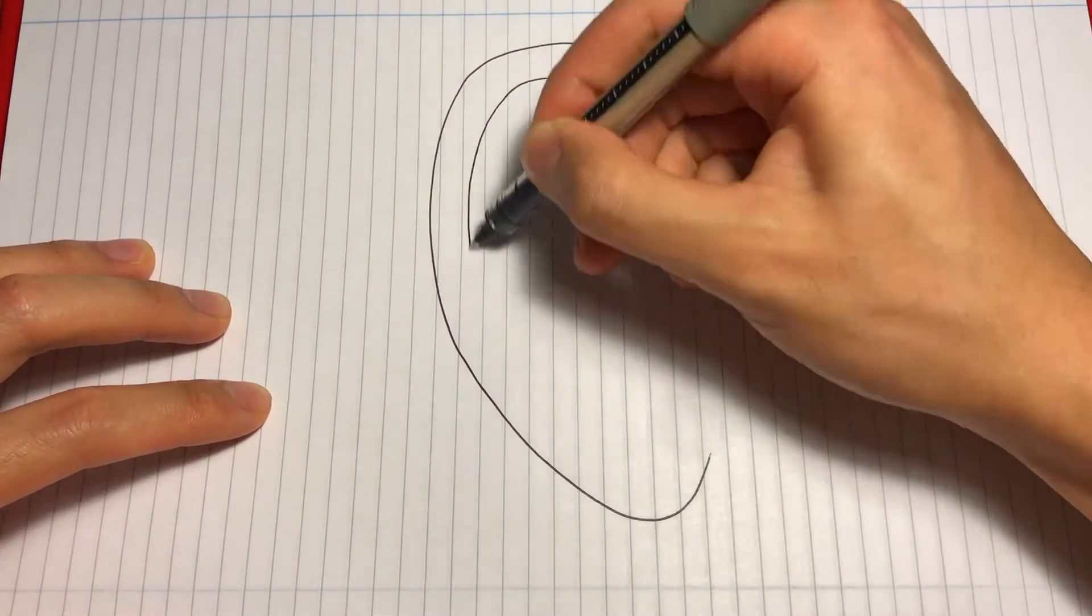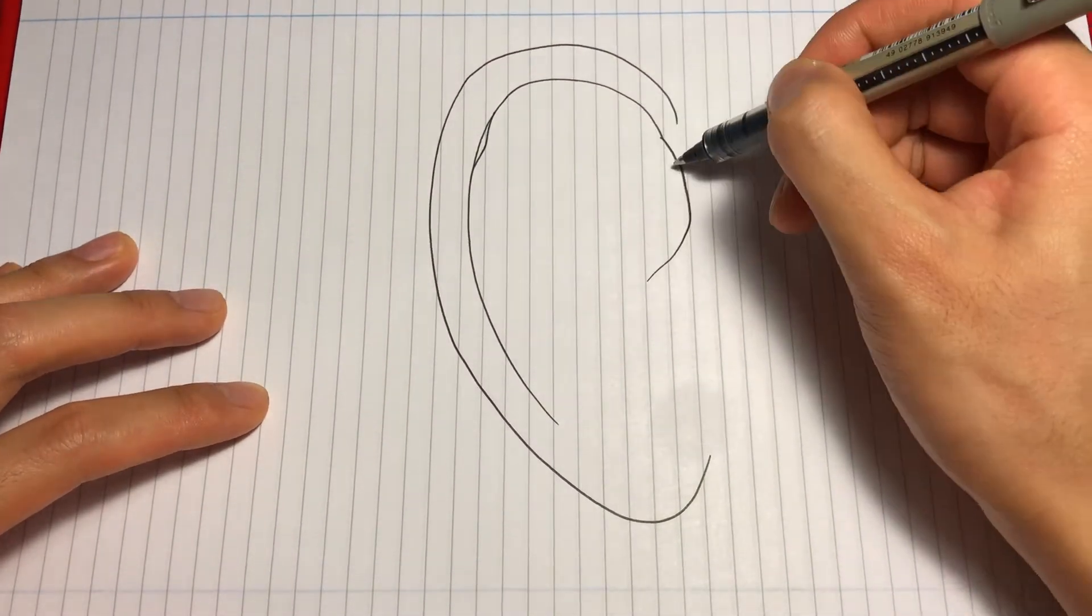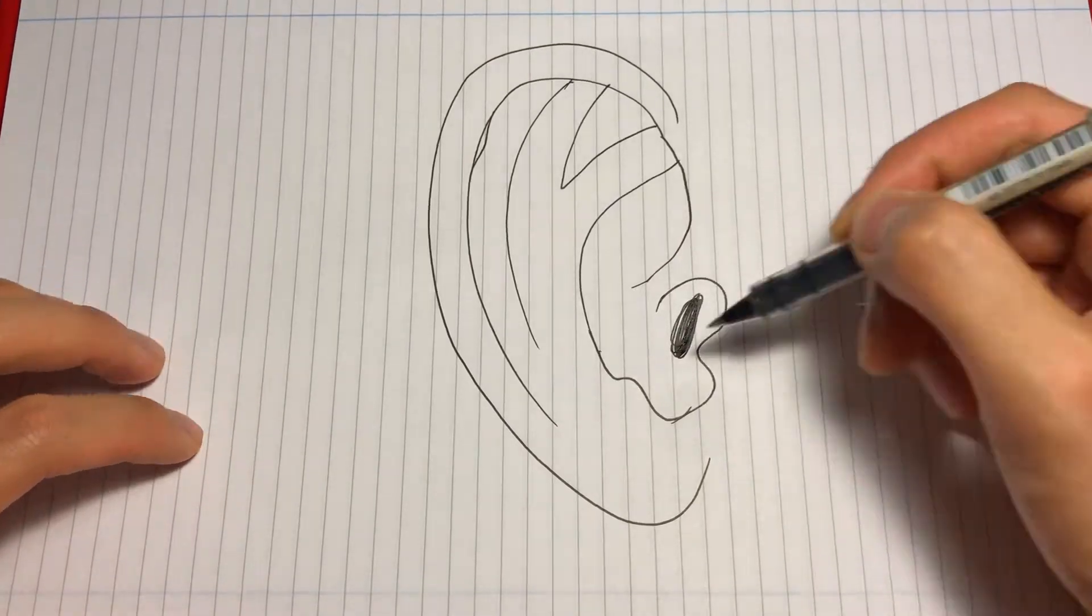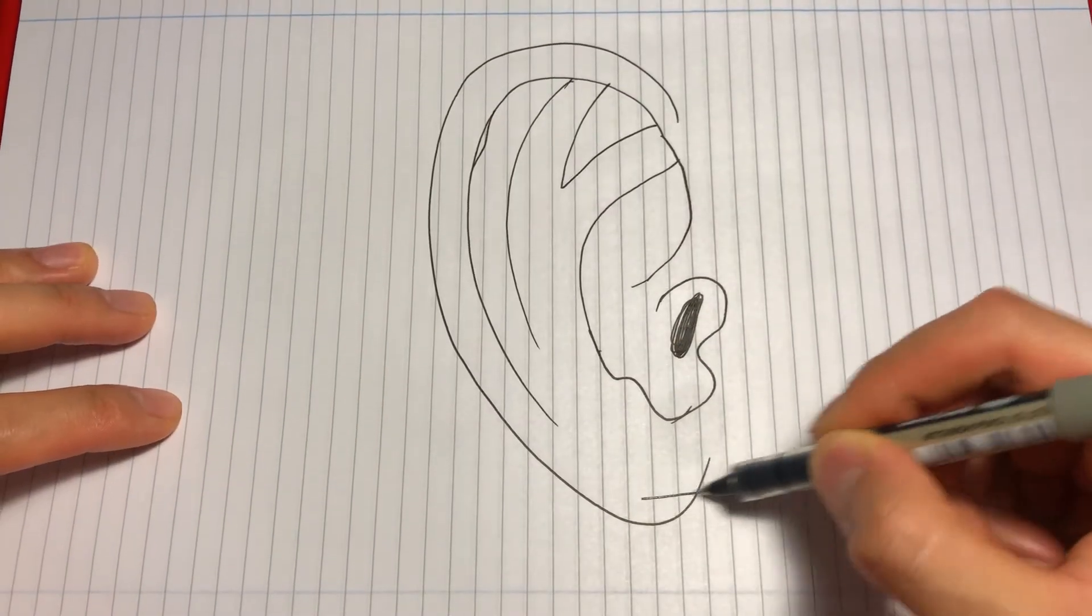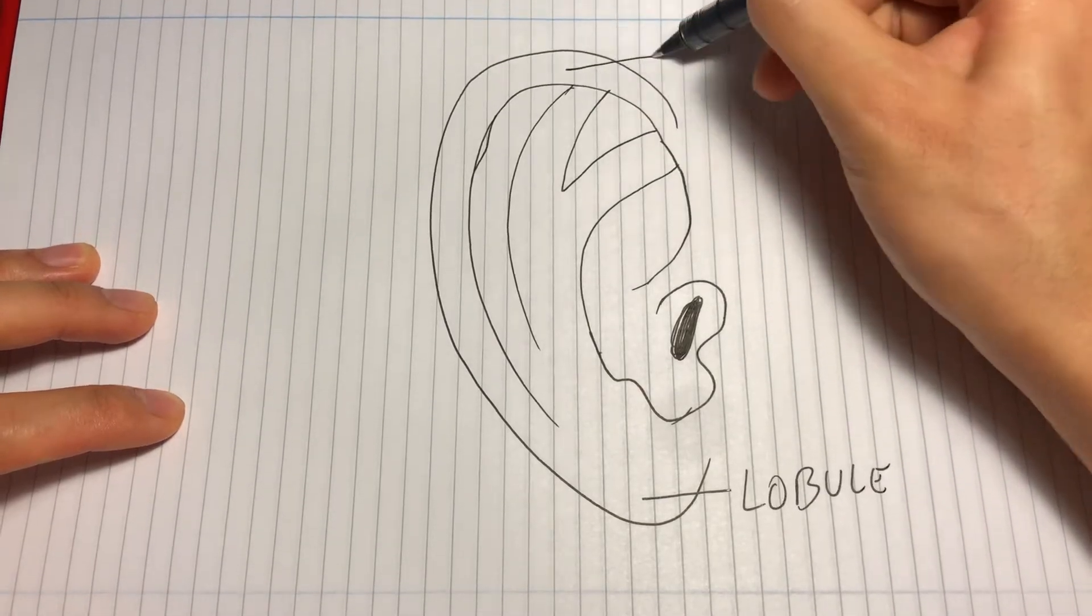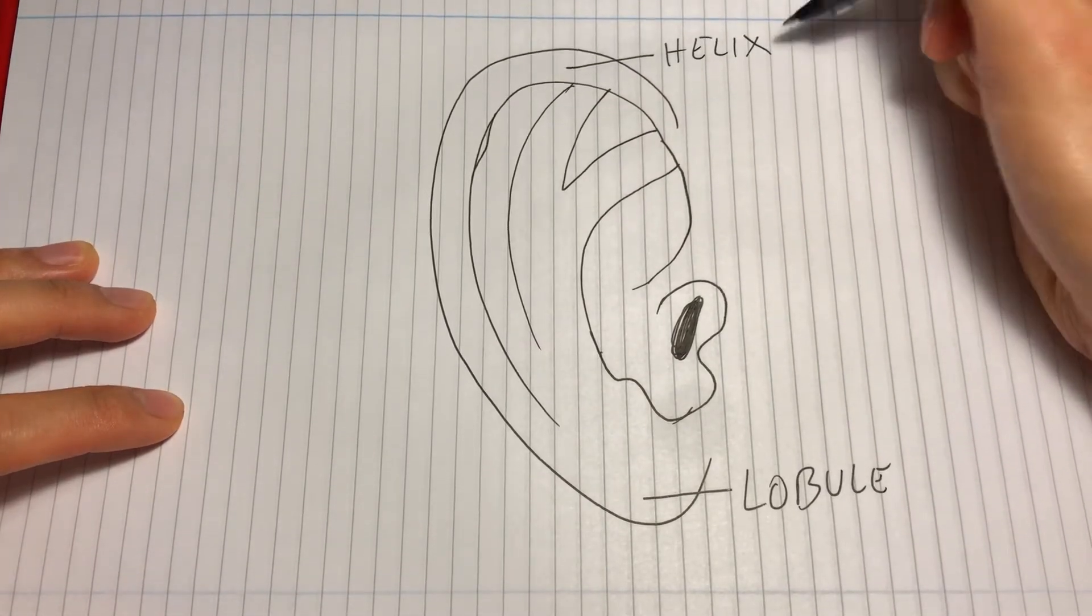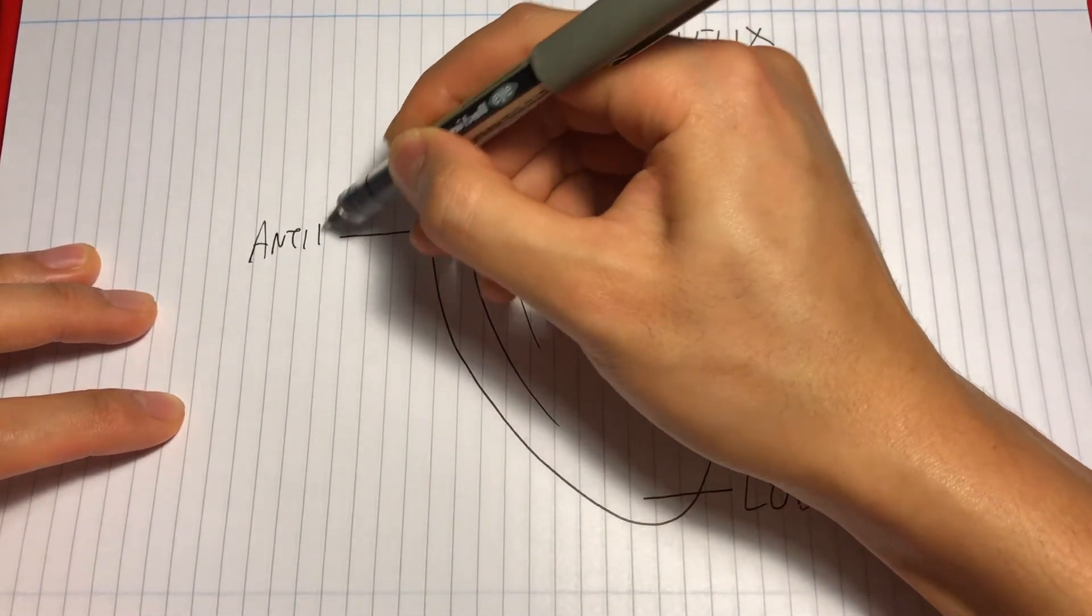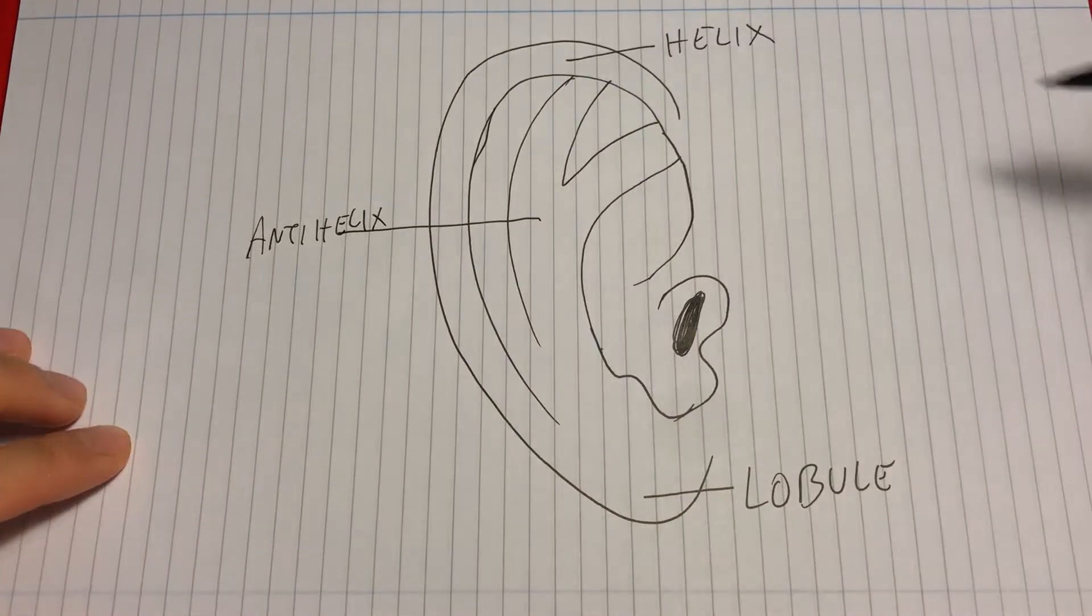Now let's look at the external features of the pinna. We'll start with the lobule at the inferior part, which is often pierced and lacks any cartilage. Next, the rim of the pinna is formed by the helix. And just inside this is the anti-helix.